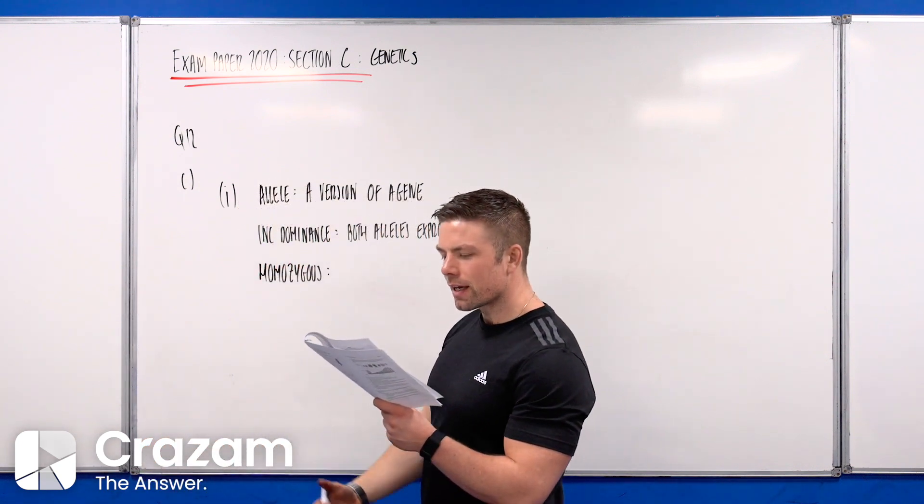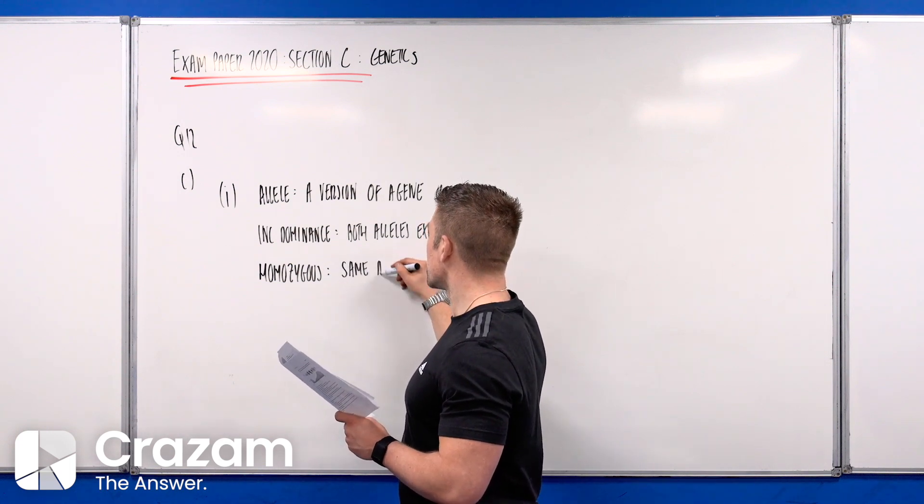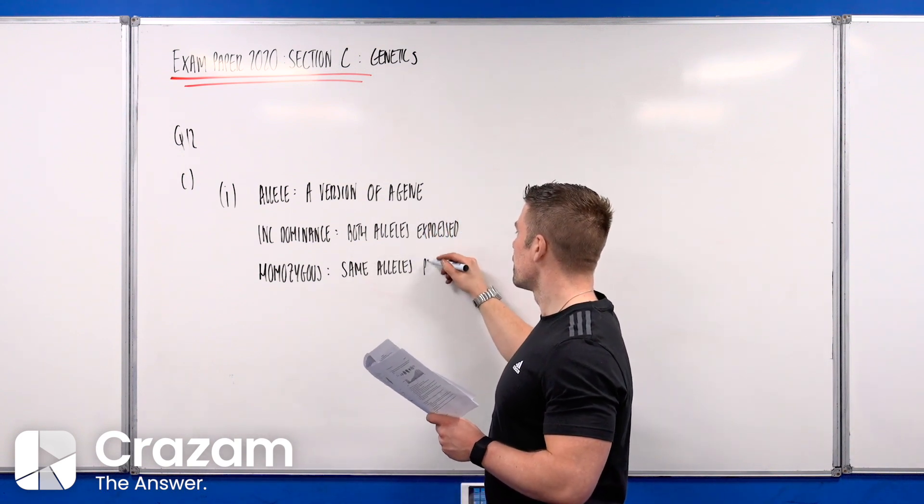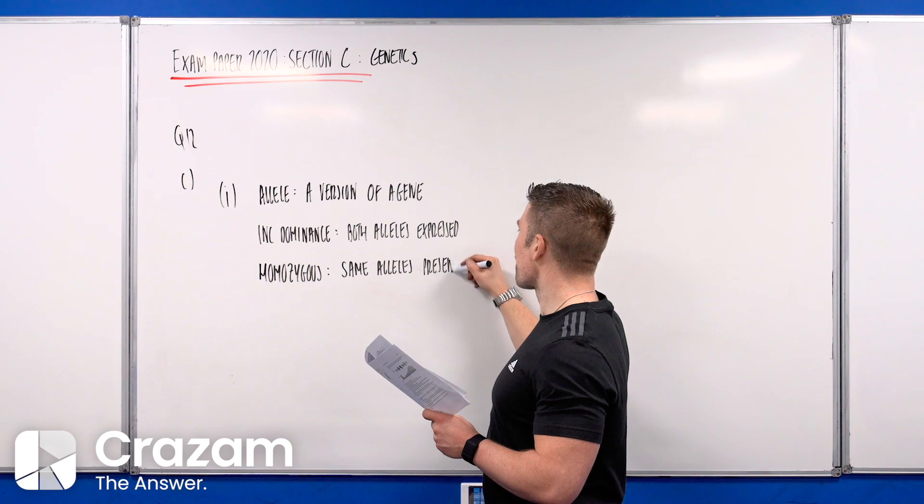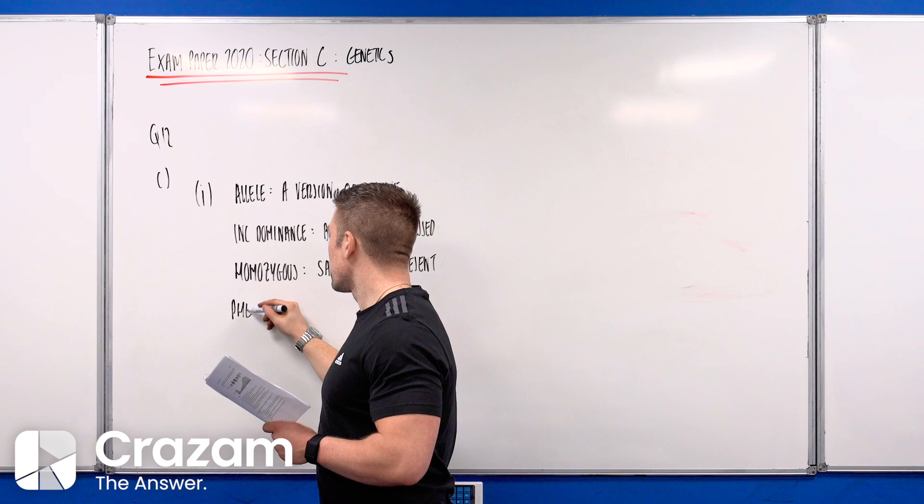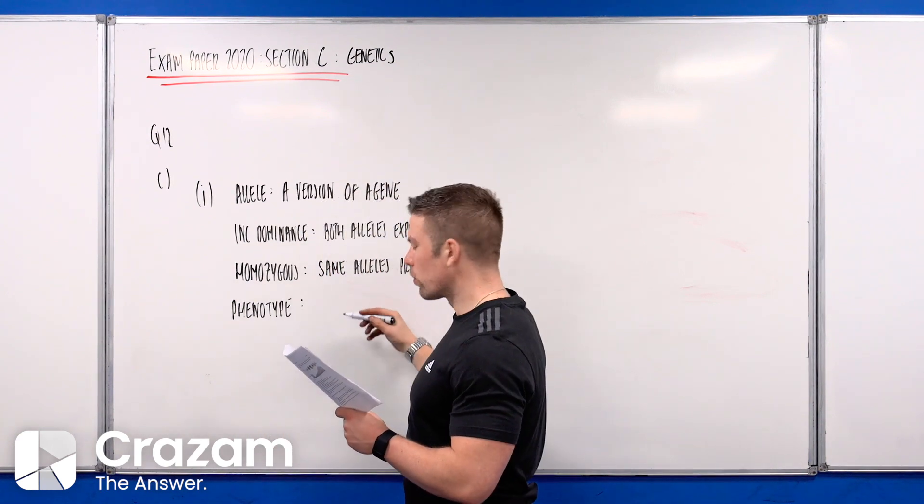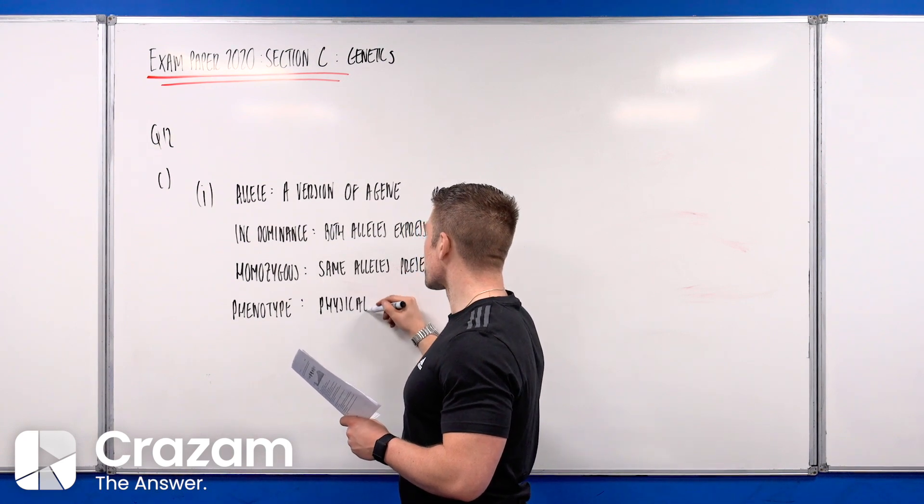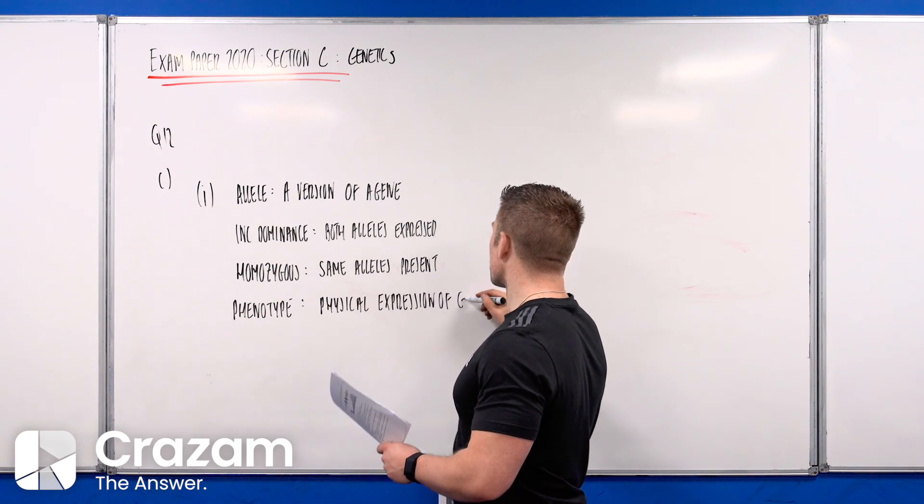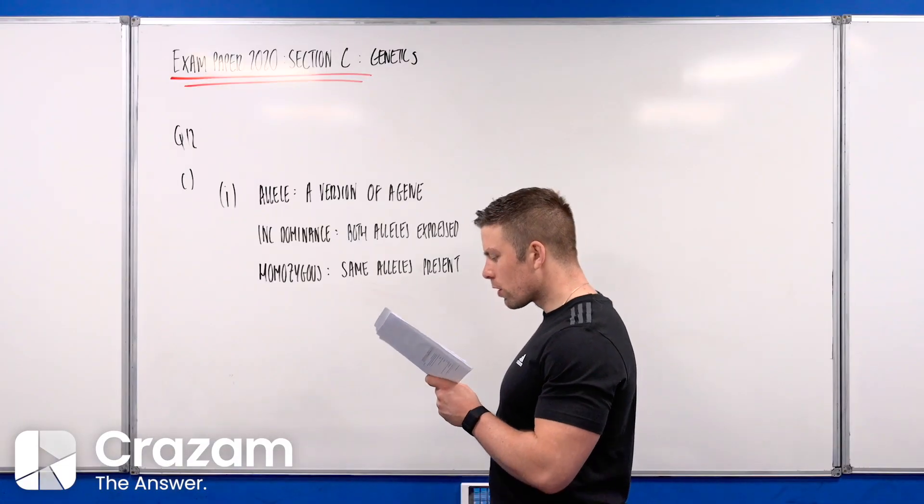The last one is phenotype, which means how it physically looks - the physical expression of the gene. Part 2 says determine all the possible genotypes and phenotypes of the offspring of a cross between a blue rooster and a blue hen.